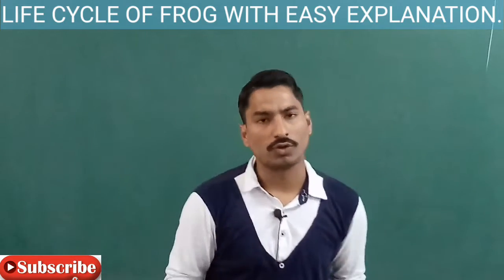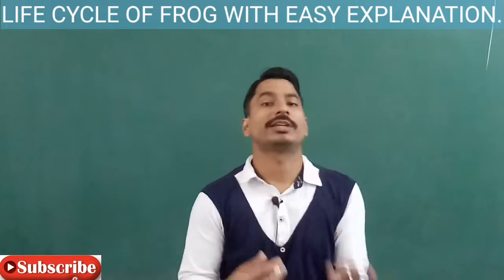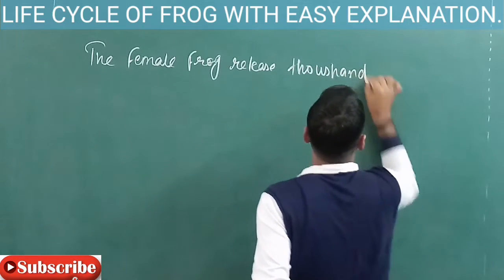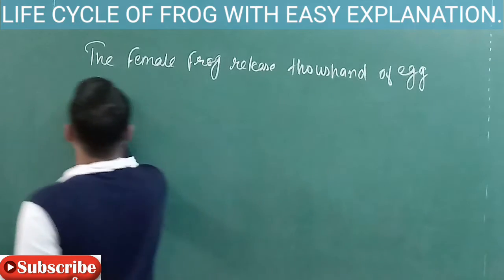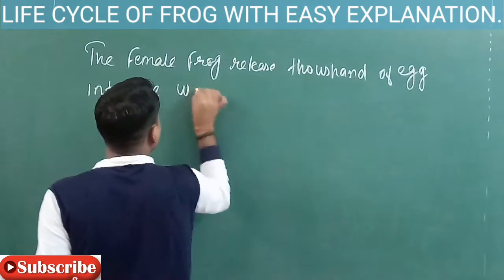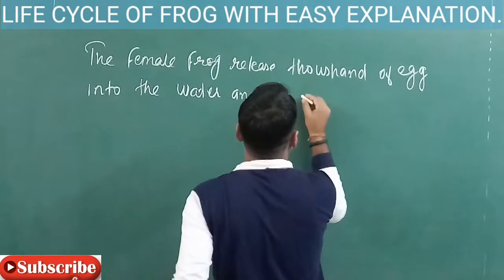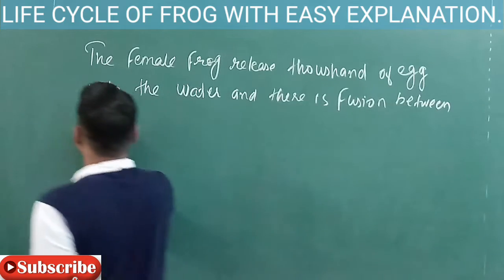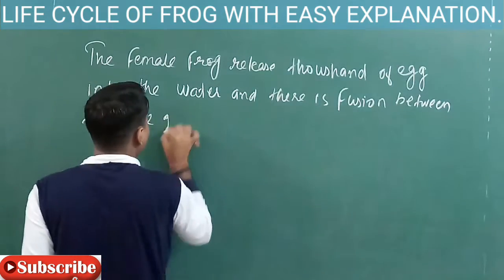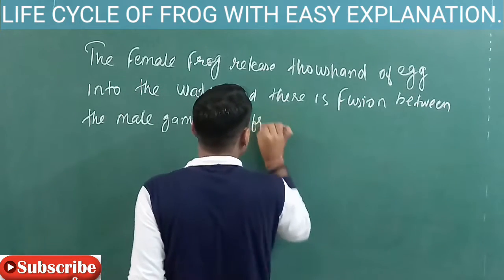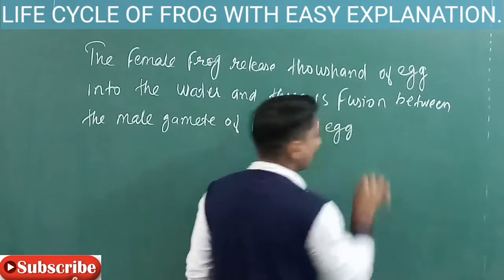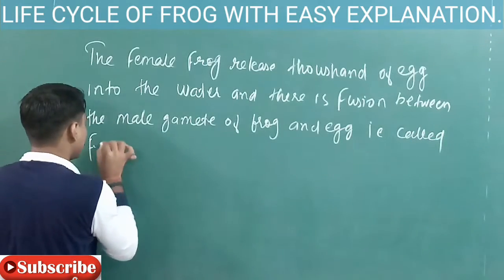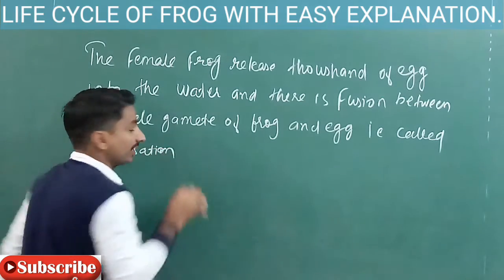Now for the written explanation of the life cycle of frog: the female frog releases thousands of eggs into the water. There is a fusion between the male gamete of frog and the egg — which is called fertilization. After fertilization, there is a formation of larva or tadpole.